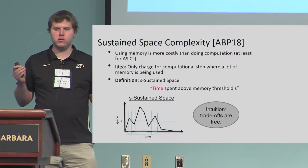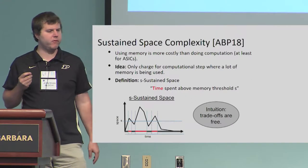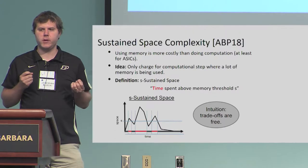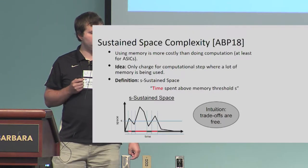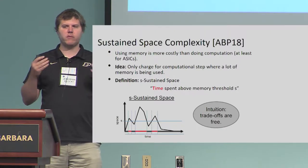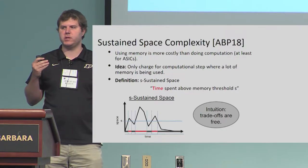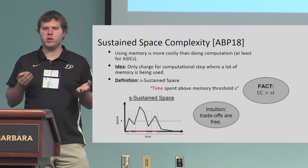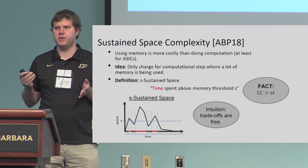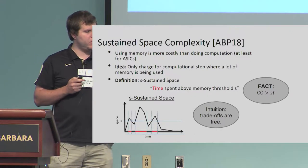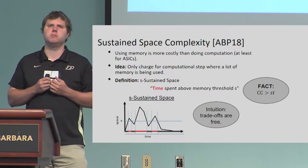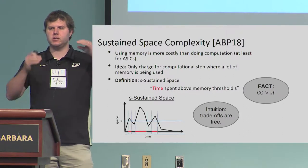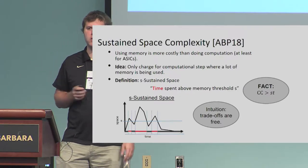One more metric to measure the quality of a memory-hard function is sustained space complexity. This is a more stringent requirement than cumulative memory complexity. We define S-sustained space complexity as the number of pebbling rounds in which the attacker has at least S pebbles on the graph. Intuitively, if we have S-sustained space complexity T, then the cumulative memory complexity has to be at least S times T. So this is a stronger requirement: if we have high ST-sustained space complexity, we can rule out attacks in which the attacker has low memory usage at any point in time.